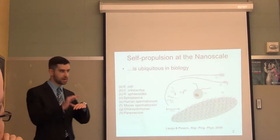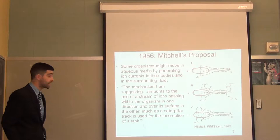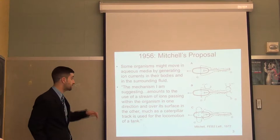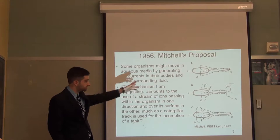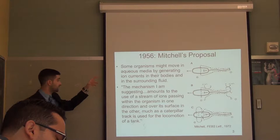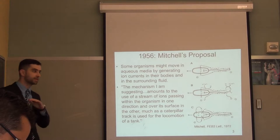Not all microscale organisms are necessarily driven mechanically. In 1956, a British scientist named Peter Mitchell, a future Nobel laureate, proposed that some organisms might move in aqueous solutions by generating ion currents in their bodies and in the surrounding fluid. Ions are generated at the body and consumed at the tail, creating an ion flux from forward to back. Mitchell said the mechanism amounts to the use of a stream of ions passing within the organism in one direction and over its surface in the other, much as a caterpillar track is used for locomotion of a tank. However, it's a speculative mechanism — he didn't claim to have actually observed it working.